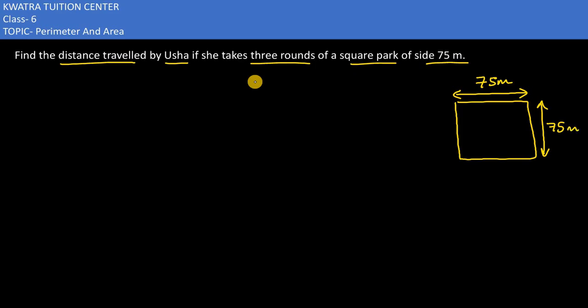Now if we want to calculate three rounds, let's consider one round first. One round would obviously be equal to the perimeter, because she is taking rounds around the perimeter of the square. So what does this mean?